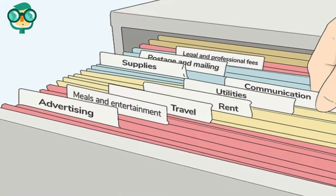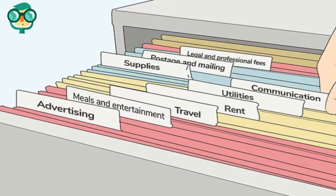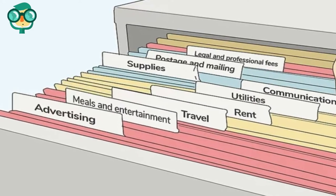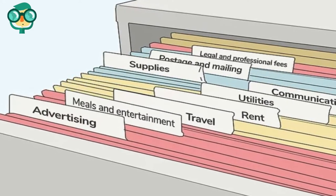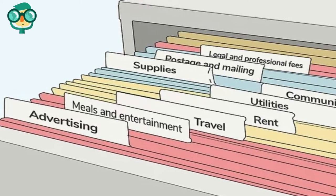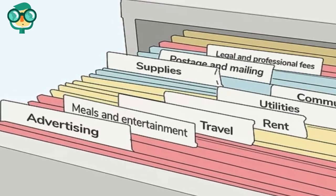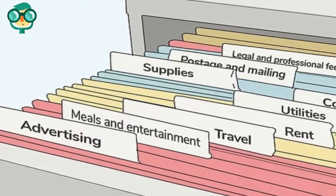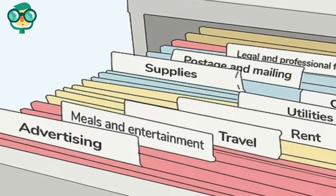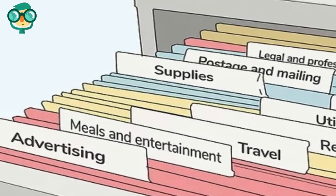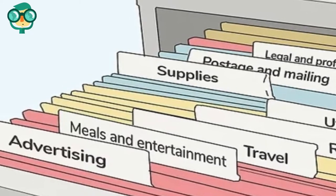Organize your receipts by category. When you do your taxes, you'll have to total your deductions under specific categories. If you file your receipts in these categories, you'll have already done this work. Keep your receipts in chronological order. While this isn't specifically necessary, it can help you estimate your taxes when you file quarterly taxes. It can also help you more easily locate a specific expense.